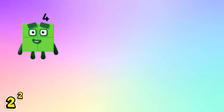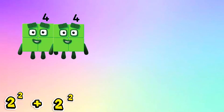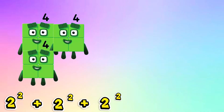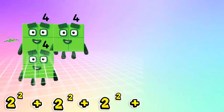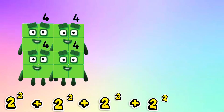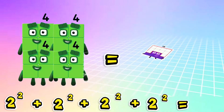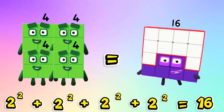2 squared plus 2 squared plus 2 squared plus 2 squared is equals to 16.